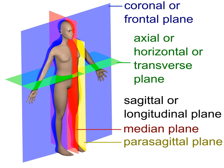Sometimes the orientation of certain planes needs to be distinguished, for instance in medical imaging techniques such as sonography, CT scans, MRI scans, or PET scans. One imagines a human in the anatomical position, and an x-y-z coordinate system with the y-axis going from front to back, the x-axis going from left to right, and the z-axis going from up to down. The z-axis is typically oriented upward, and the right-hand rule applies.